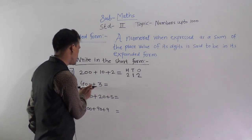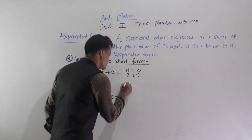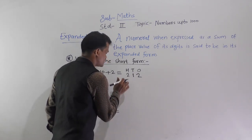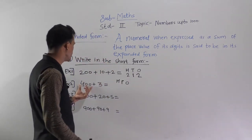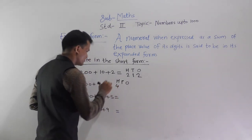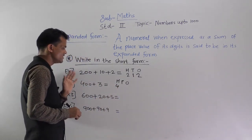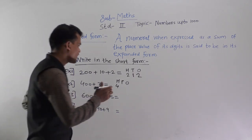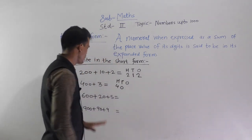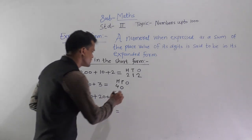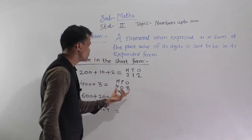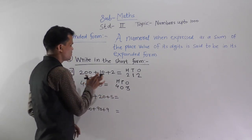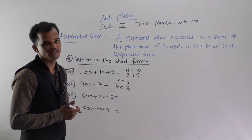Next: 400 plus 3. This is also a three-digit number with ones, tens, and hundreds places. How many hundreds? 400. How many tens? The tens digit is not given, so write 0 here. How many ones? 3 ones. So 403 is the short form of 400 plus 3.